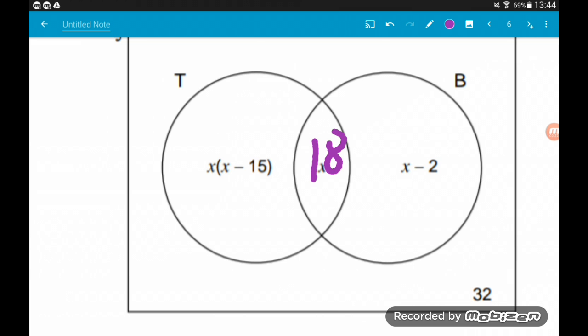In T, we've got x times (x minus 15), so that's 18 times (18 minus 15). 18 minus 15 is 3, 3 times 18 is 54. So we've got 54 20th century only coins.